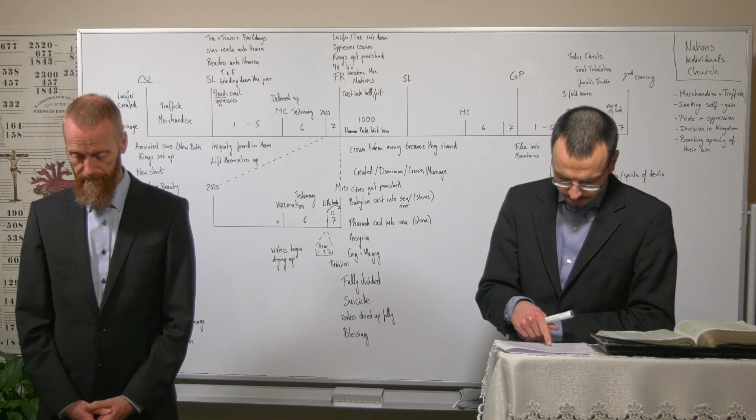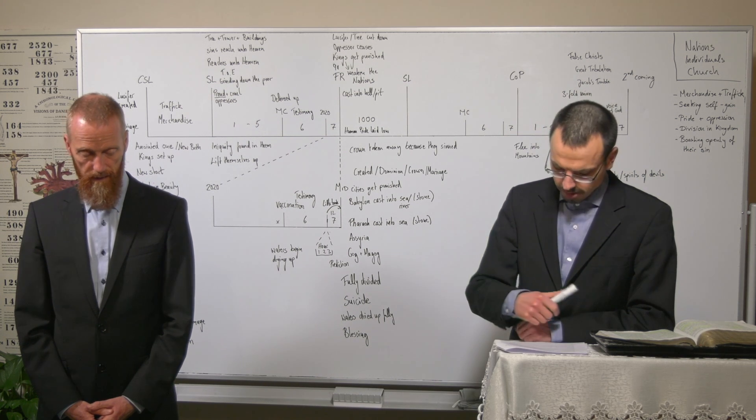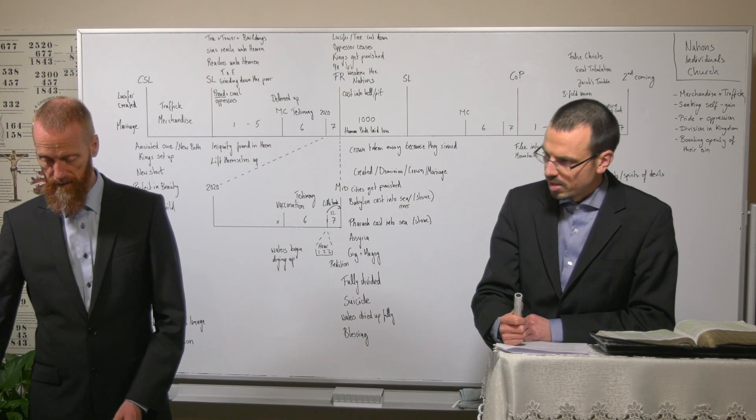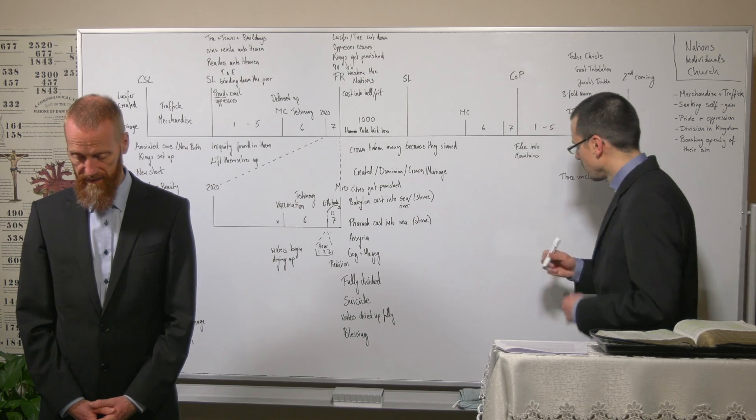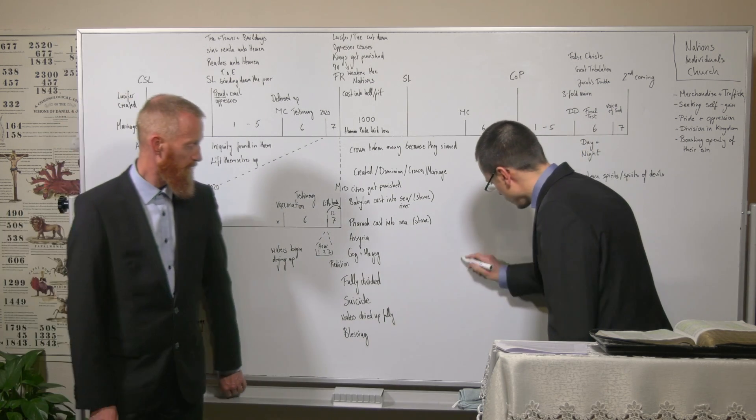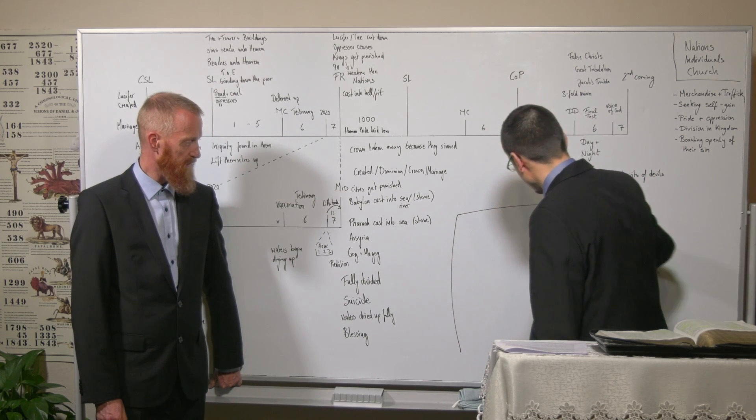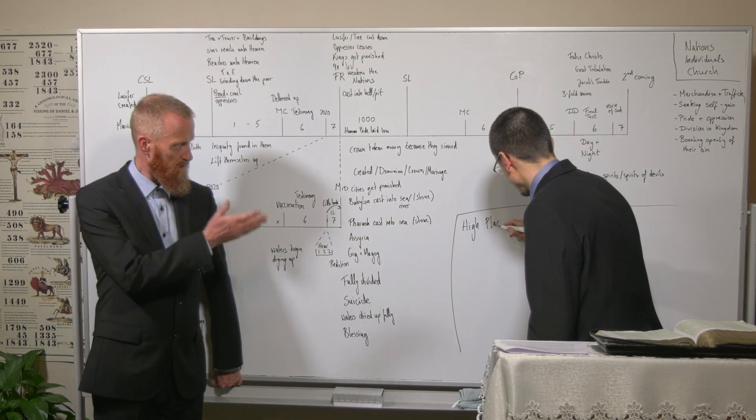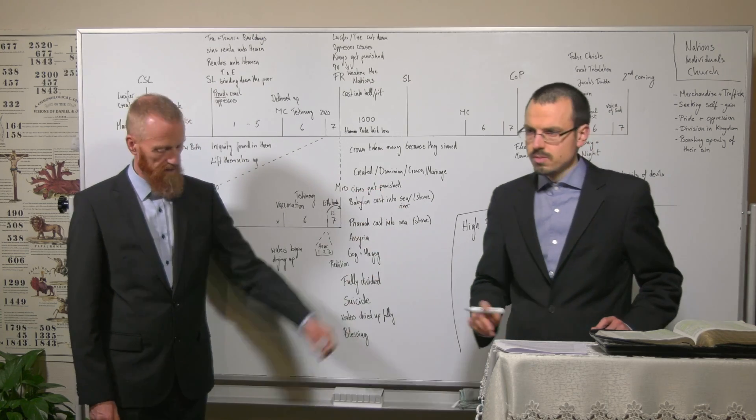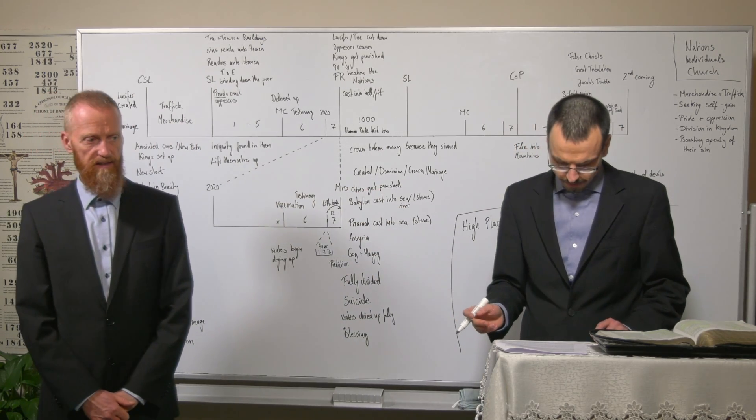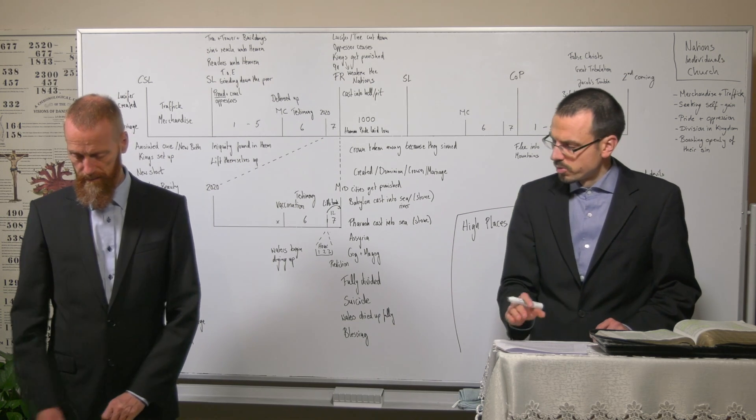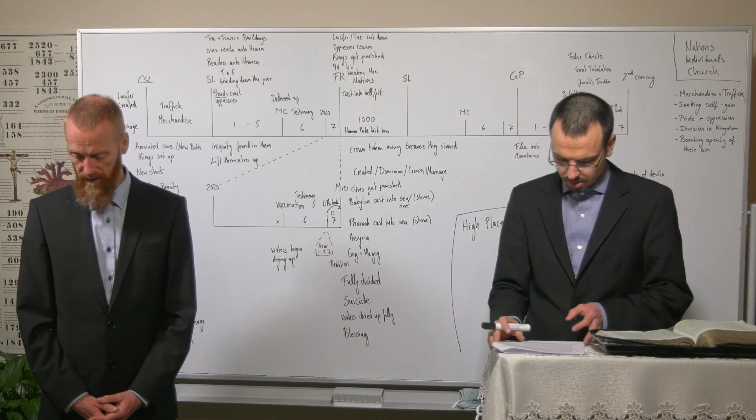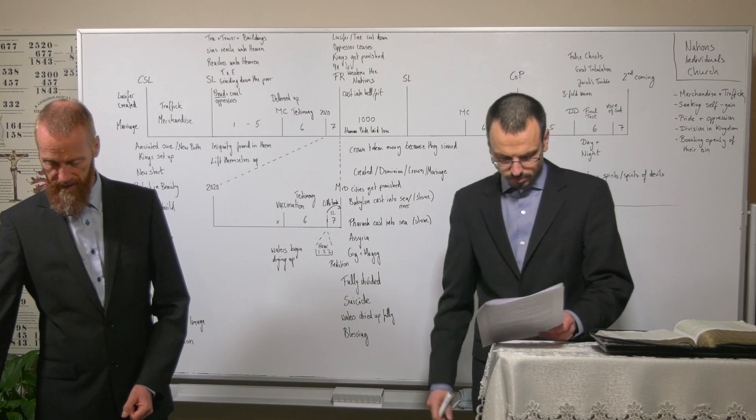So when the Lord comes now forth out of his place, out of his temple, what is he coming to do? To punish. Because when we go to Isaiah 26 verse 21, it says: For behold, the Lord cometh out of his place to punish the inhabitants of the earth for their iniquity. That's the seventh plague. So here in Micah, when he comes forth out of his place, he will tread upon the high places of the earth.